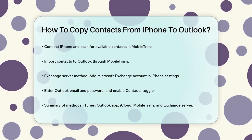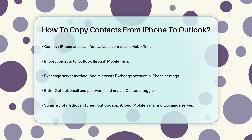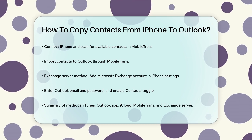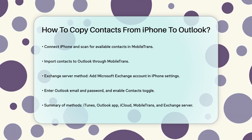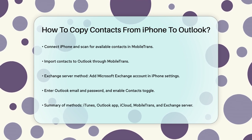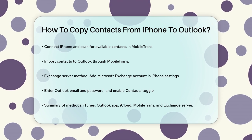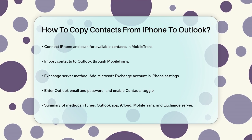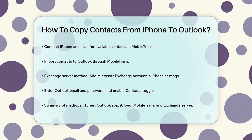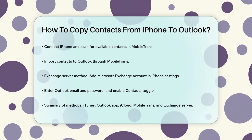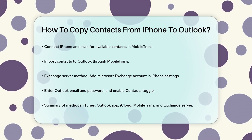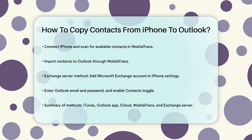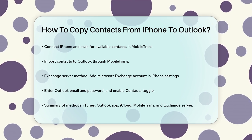Lastly, if your company uses an Exchange server, you can sync your Outlook contacts through the iPhone's settings. Go to Settings, select Mail, then Accounts, and add a Microsoft Exchange account. Enter your Outlook email address and password, and ensure the Contacts toggle is switched on. This will sync your Outlook contacts directly to your iPhone's Contacts app.